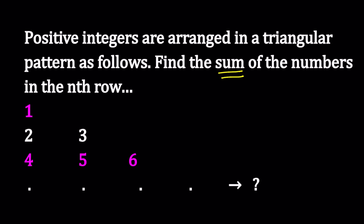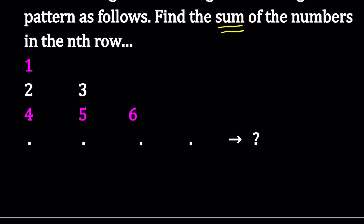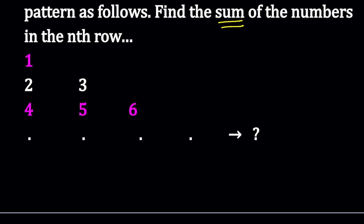We have the positive integers starting with 1, 2, 3, 4, 5, 6, and so on. There's going to be at least n rows, and we want to find the sum of the numbers in the nth row.